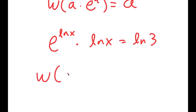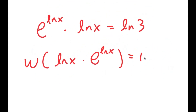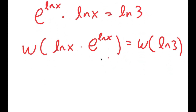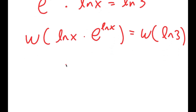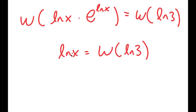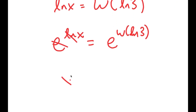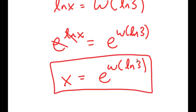If I take the Lambert W function on both sides, I get W of ln x times e to the power of ln x is equal to W of ln 3. The left side simplifies to just ln x, so I'm left with ln x is equal to W of ln 3. Now I want to get rid of this ln, so I take e to the power of both sides. Since e to the power of ln cancel out, I get x is equal to e to the power of W of ln 3. So this is my answer to this equation.